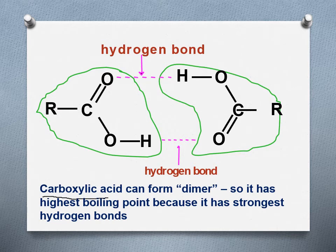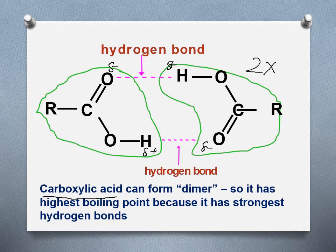For carboxylic acid, it's a bit of an anomaly. Two molecules of carboxylic acid have two hydrogen bonding interactions: the first between the electronegative part of one carboxyl group and the electropositive hydrogen of the carboxyl group of another compound. So we have two interactions within carboxylic acid, giving it the highest boiling point and highest solubility compared to other compounds, because it has more hydrogen bonds.